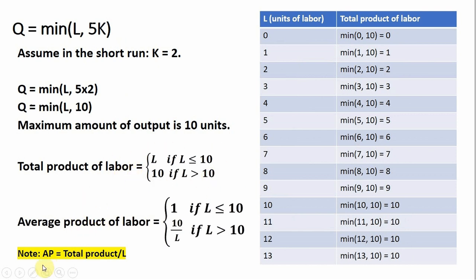Average product of labor is just total product divided by L. To get average product of labor, we take the total product of labor function and divide by L. When L is less than or equal to 10, L divided by L is just 1. For example, if we have 4 workers and 4 units of output, 4 divided by 4 is 1. If we have 10 units of output from 10 workers, 10 divided by 10 gives us 1 again.